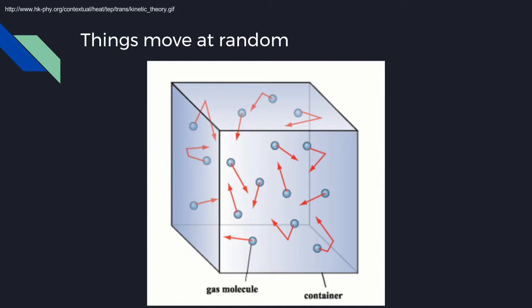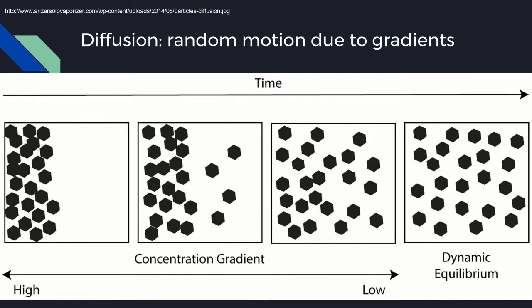But whatever it is, things move in a random order. We're not entirely sure where things are gonna go, but we can make predictions in terms of overall motion, and that's what we call diffusion. Diffusion is a random motion from a high gradient to a low gradient, and there can be a whole bunch of things as to what triggers that word gradient.